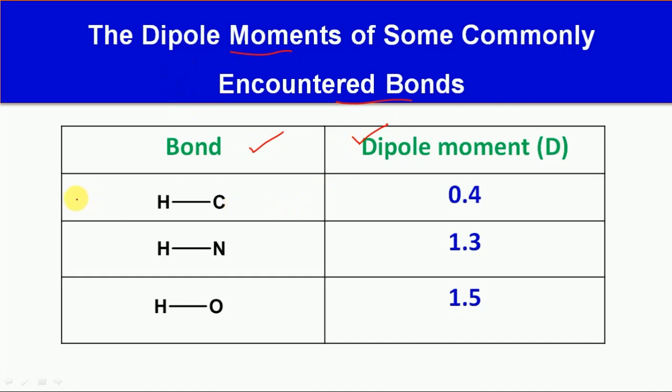First, the CH bond has a dipole moment of 0.4. Second, the NH bond has a dipole moment of 1.3. Next, the OH bond has a dipole moment of 1.5.